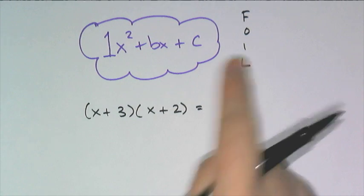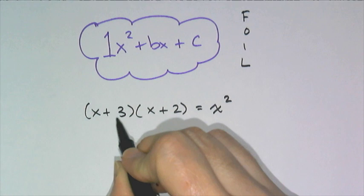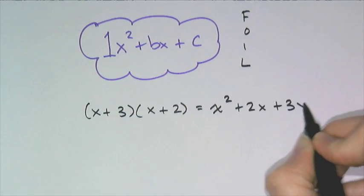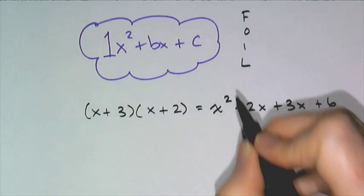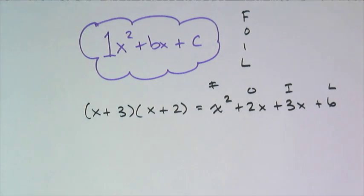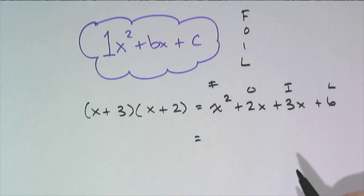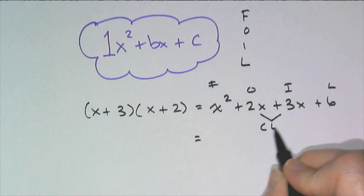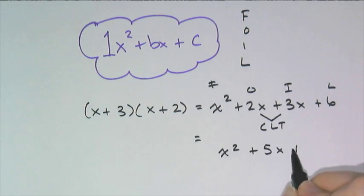So first, F is from x times x, which is x squared. Outer gives me 2x, inner gives me 3x, and last gives me 6. First, outer multiplication, inner multiplication, last multiplication. And then where I get my trinomial is from combining the like terms, and I get x squared plus 5x plus 6.